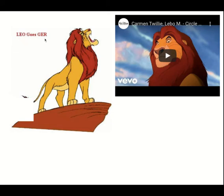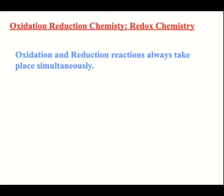Leo the lion says grr — this mnemonic has to do with oxidation and reduction. Whenever you have oxidation, you have to have reduction. They go hand in hand; one can't happen without the other.